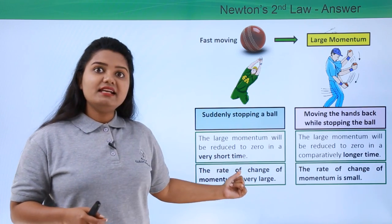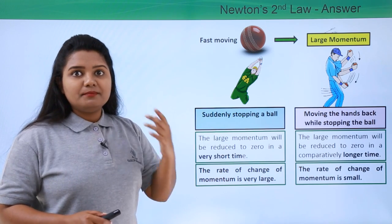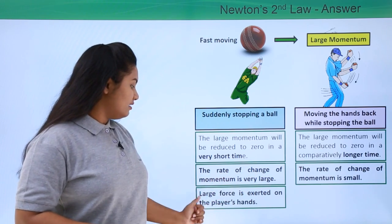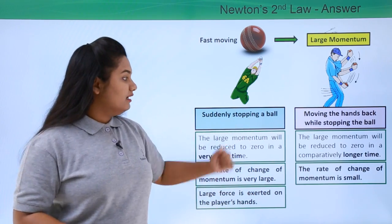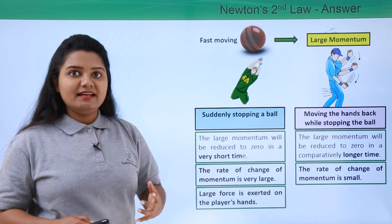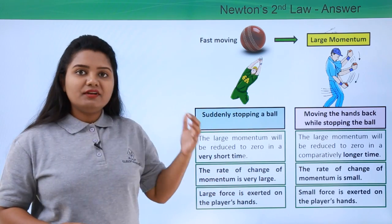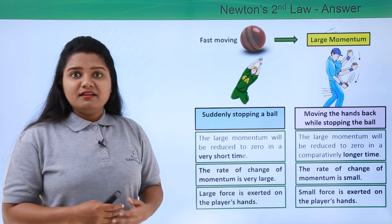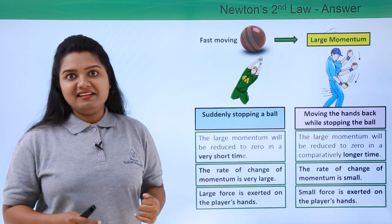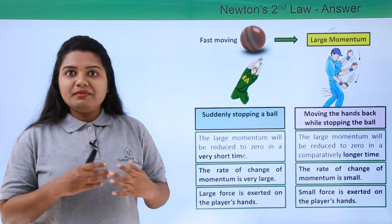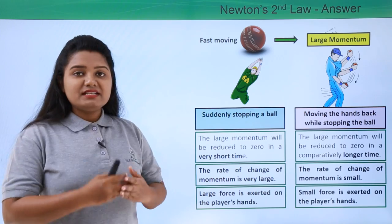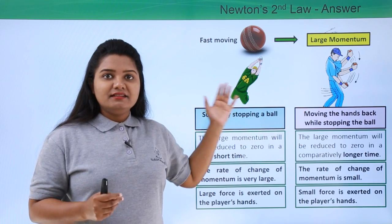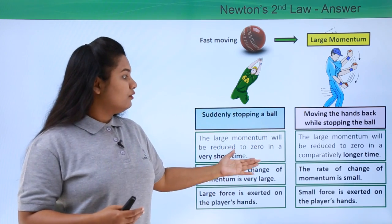Since the rate of change of momentum is very large in the sudden-stop case, the force exerted by the ball onto the player's hands is very large. In the other case — where the hands are moved backwards — the rate of change of momentum is less, so the force exerted onto the player's hands is smaller.